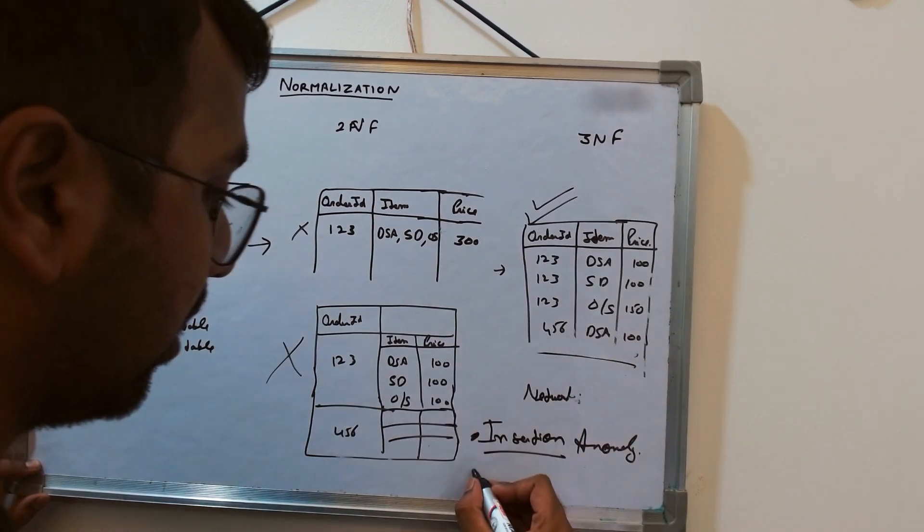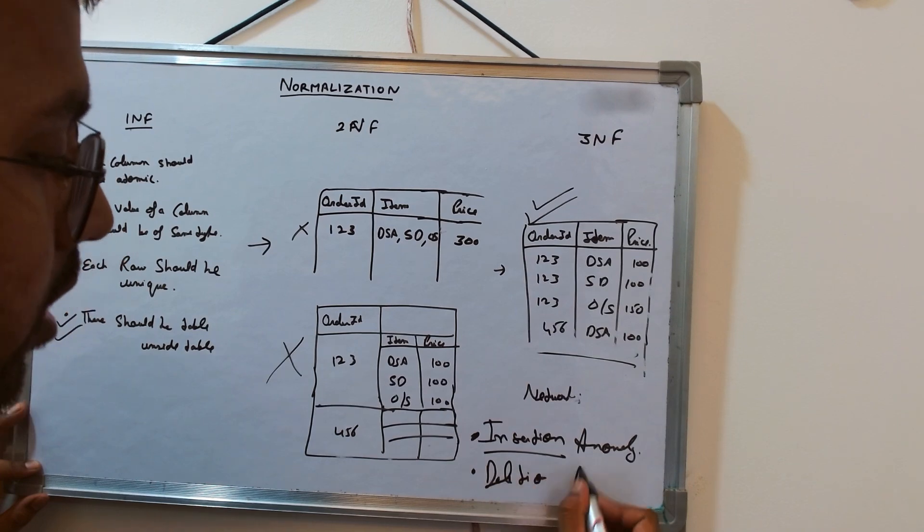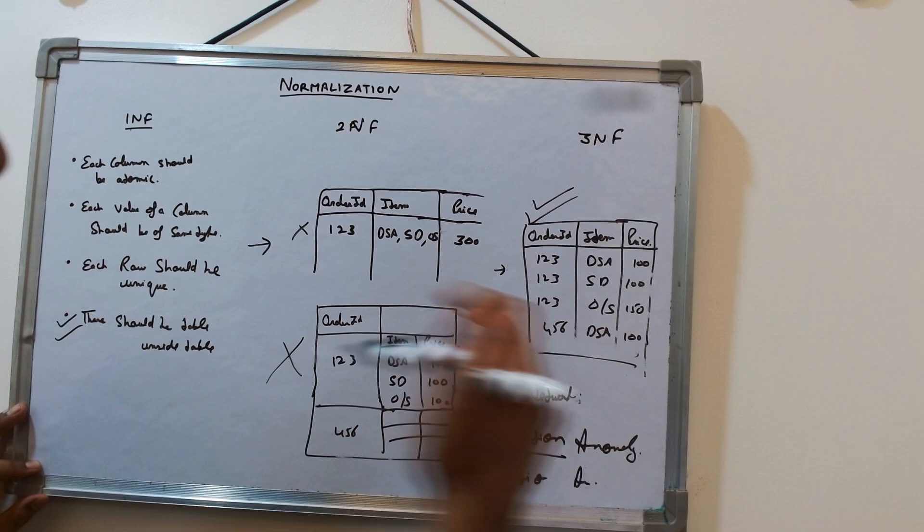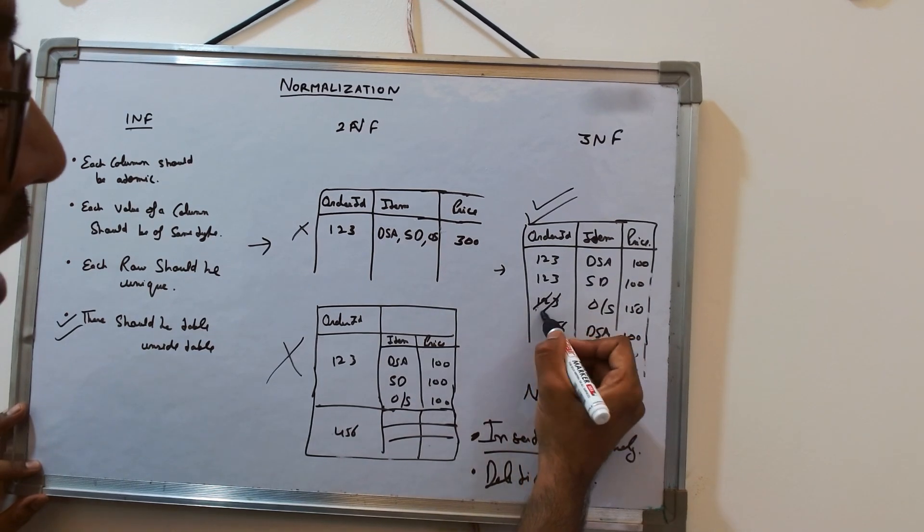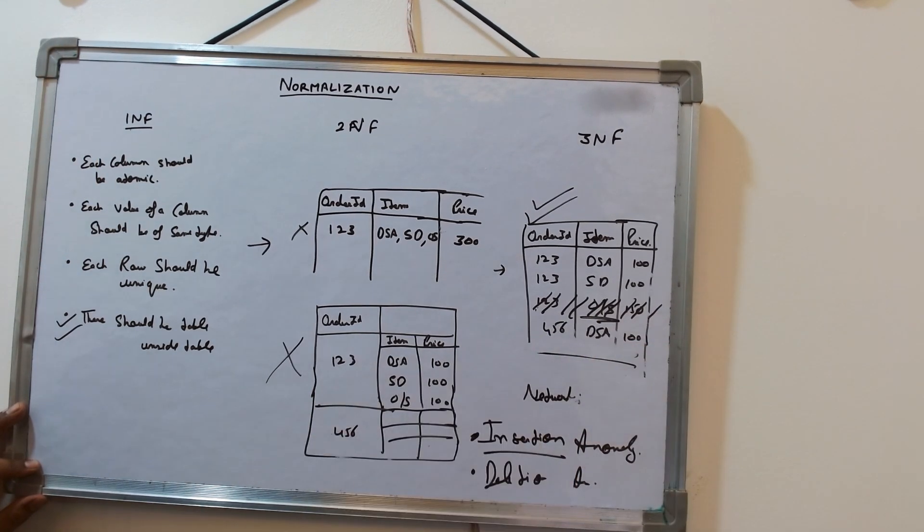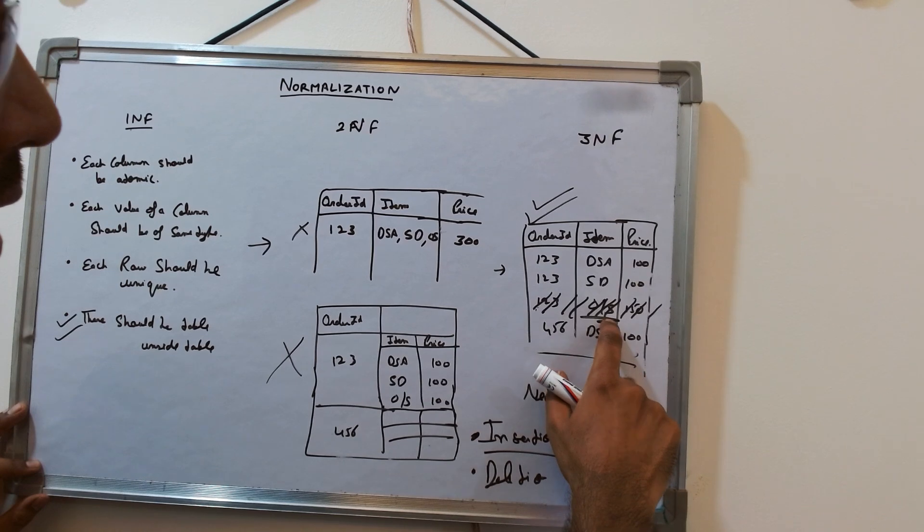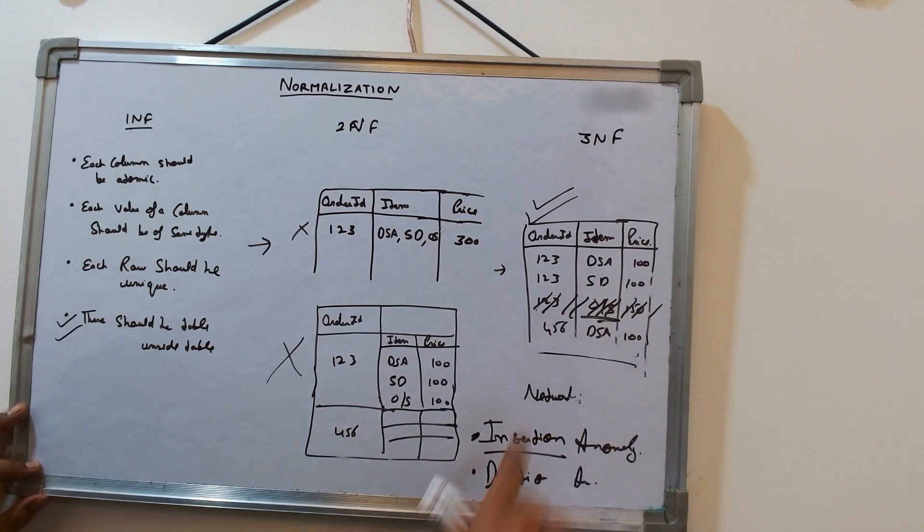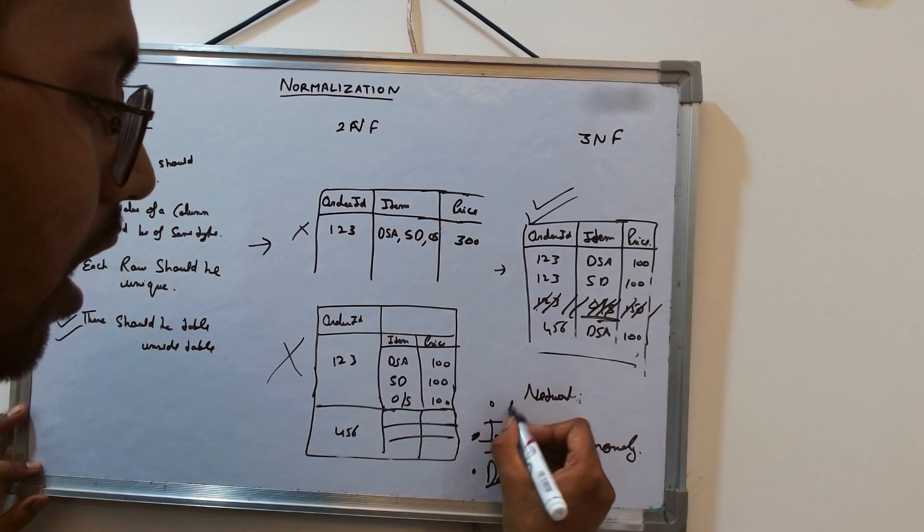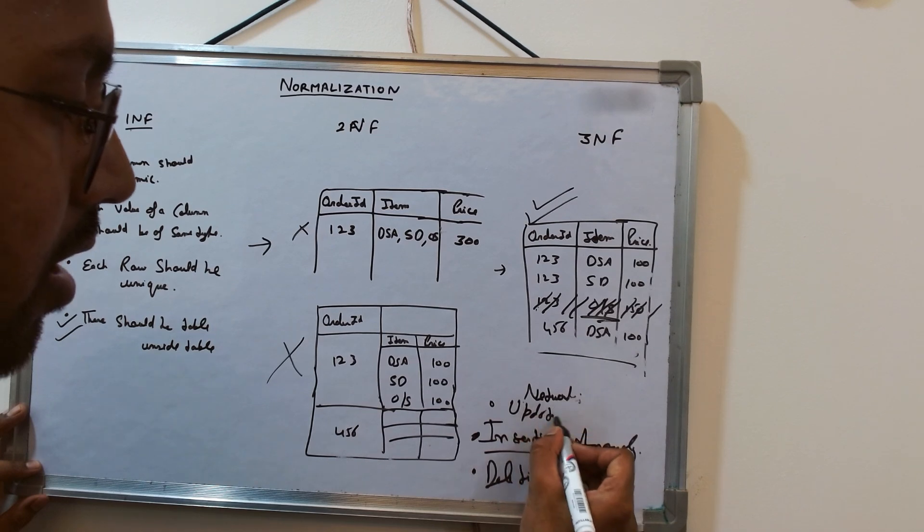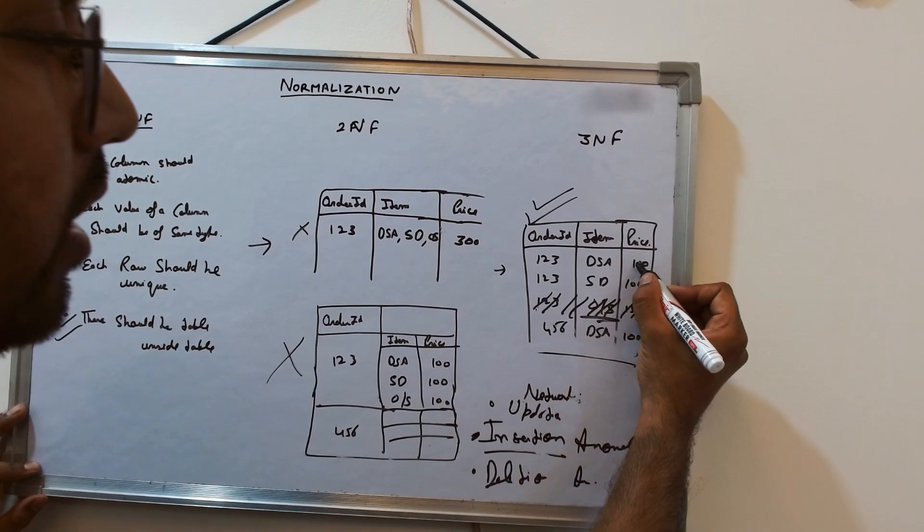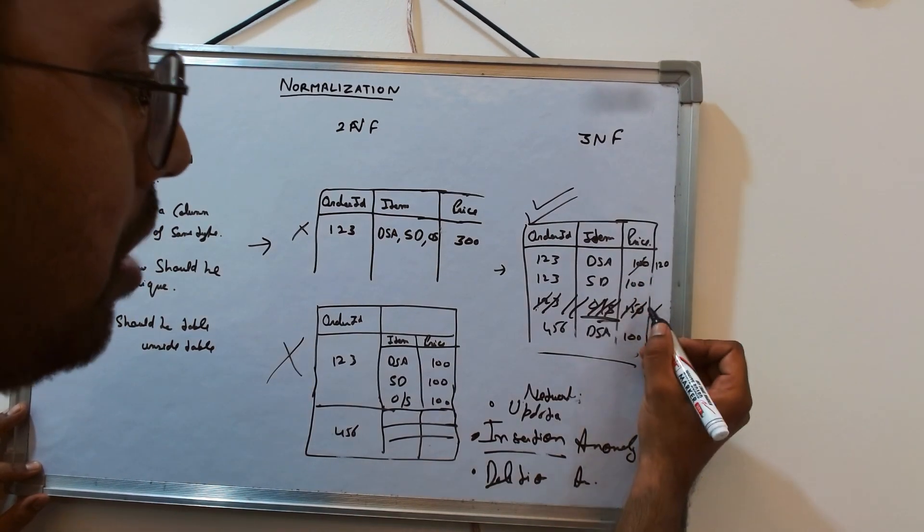Similarly, there is a deletion anomaly. Deletion anomaly means, let's say that this order ID I have to remove. As soon as I remove it, the OS record is also gone, so there is a loss of data here. With this 1NF there is a deletion anomaly also, and also updation anomaly. The updation anomaly says that if I want to change the price of DSA from 150 to 120, I have to change multiple rows, so this is prone to error.